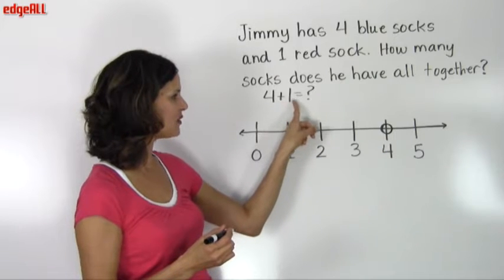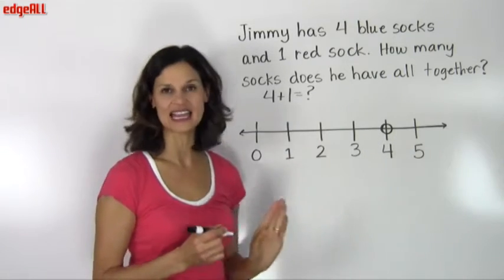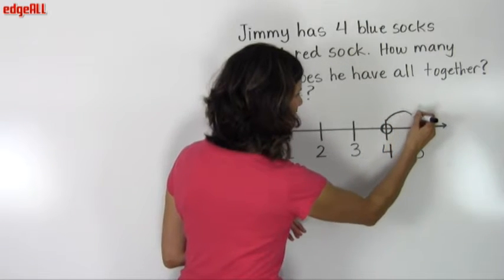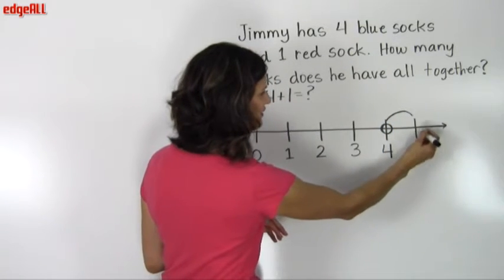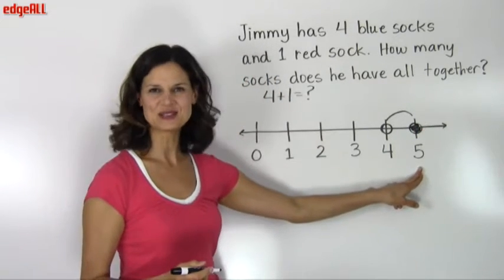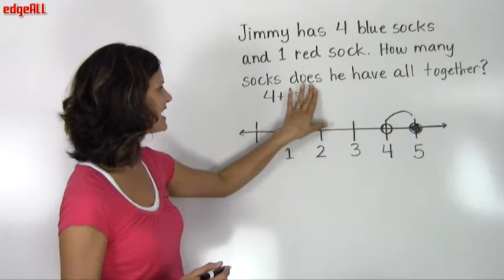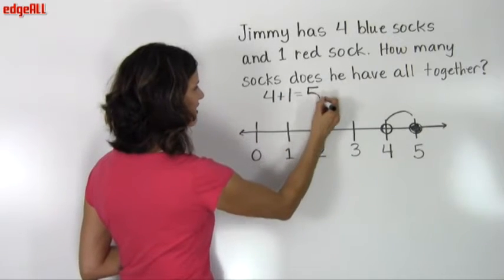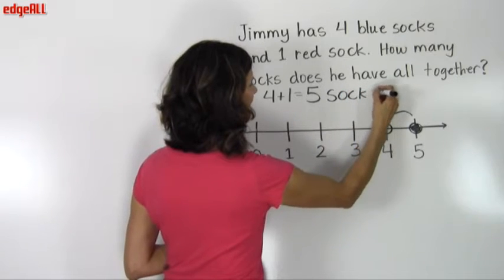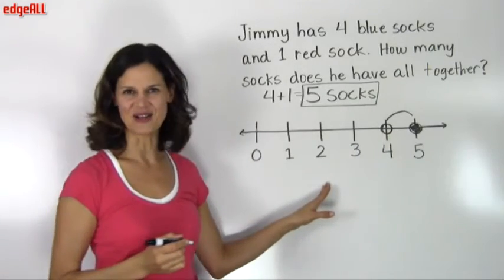4 add 1. So to add 1 to 4 using the number line, we simply move 1 space to the right. So we just move over from the 4 to the 5 and we land here on the number 5. The solution to our problem of 4 plus 1 is equal to the number 5. So Jimmy has 5 socks all together. And we used a number line to help us solve this problem.